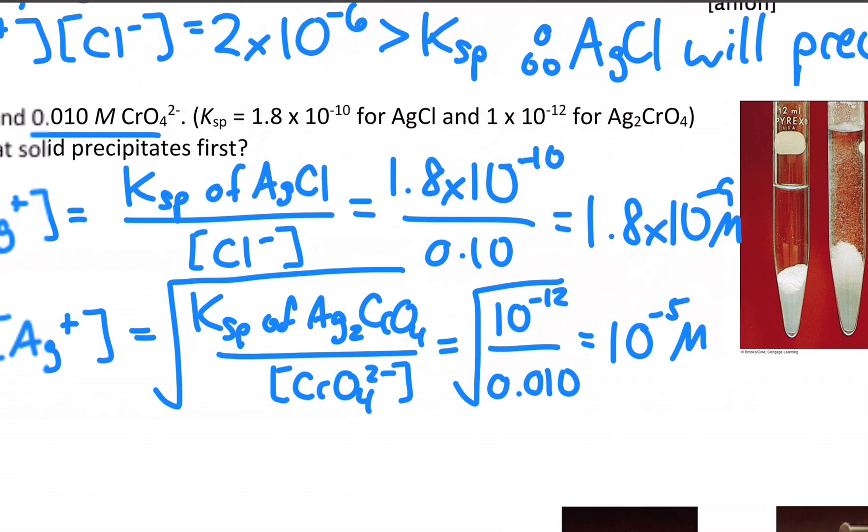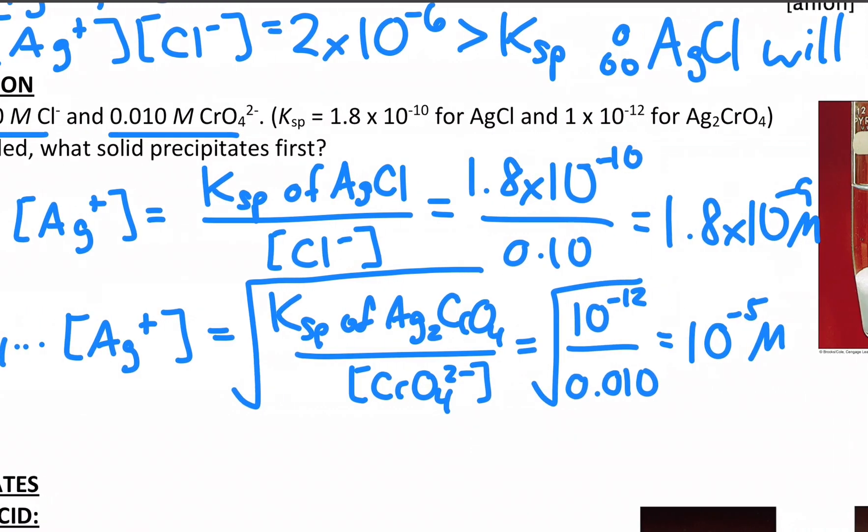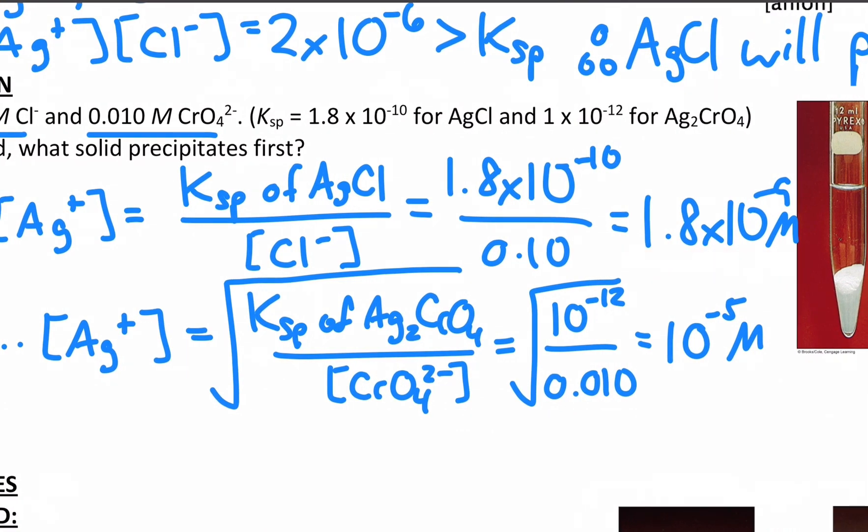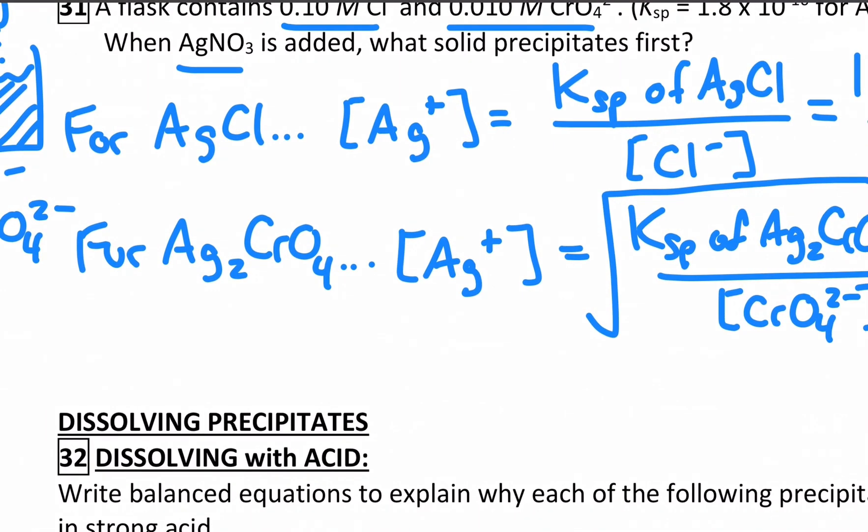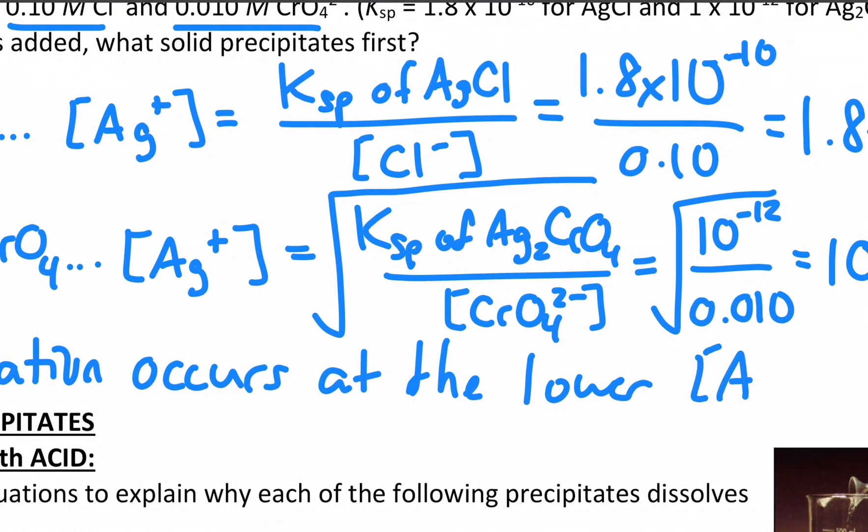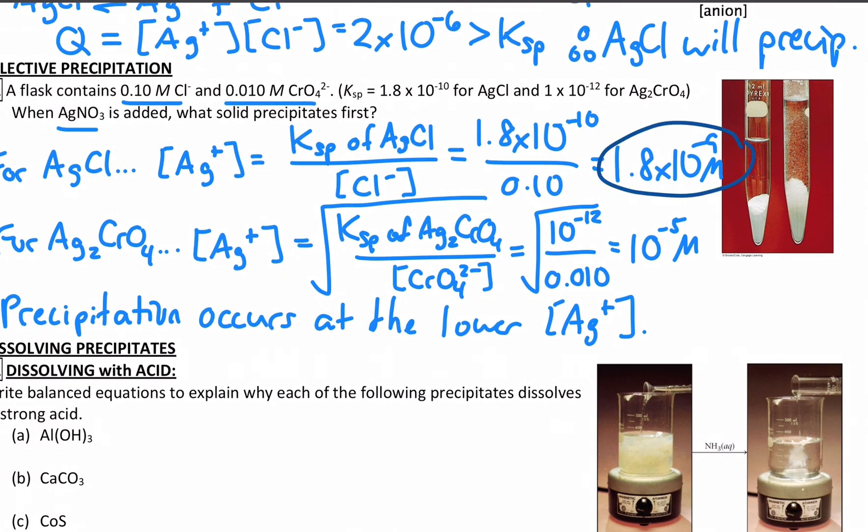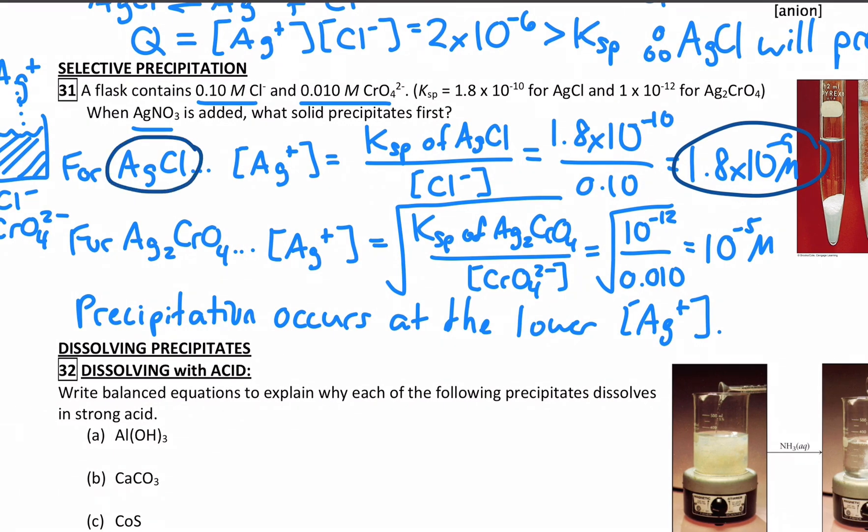So now we get to compare which one will hit first. And if you're starting with a concentration of no silver, you're going to hit the lower molarity first as you slowly add silver ion. So precipitation occurs at the lower silver ion concentration, which means I've got a lower value for AgCl. So AgCl will precipitate first.